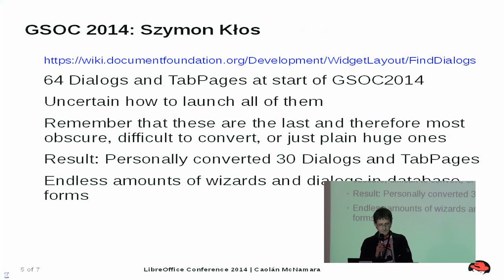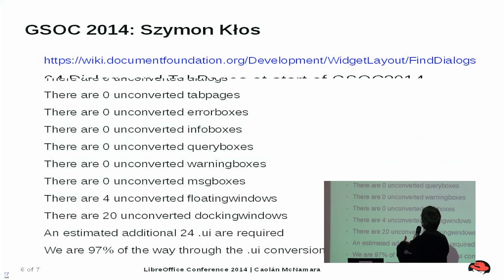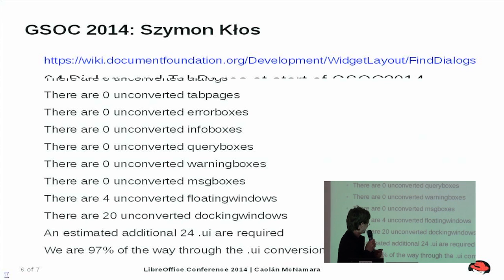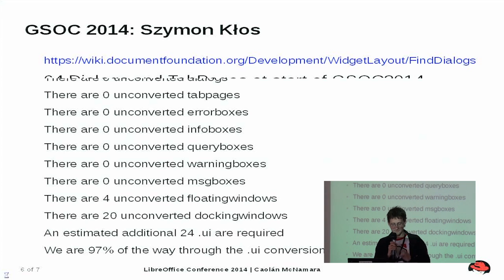The status at the end of the GSOC project was that we had 839 UI files — no dialogs, no tab pages, no error pages, nothing left in all of that. After the end of GSOC 2014, we discovered there are two remaining categories that can be loaded in SRC files requiring layout as well: floating windows and docking windows. There are 24 of them — it used to be 28 at the beginning of the week, now it's 24.